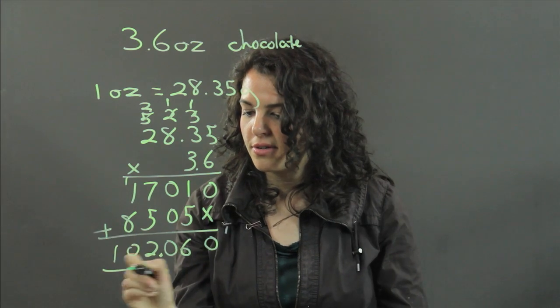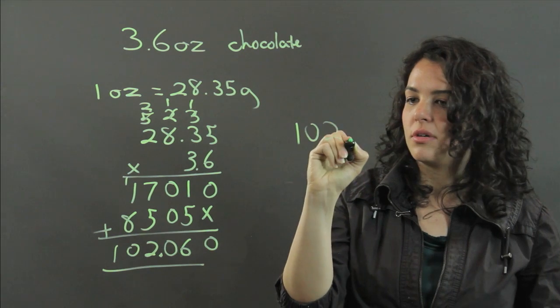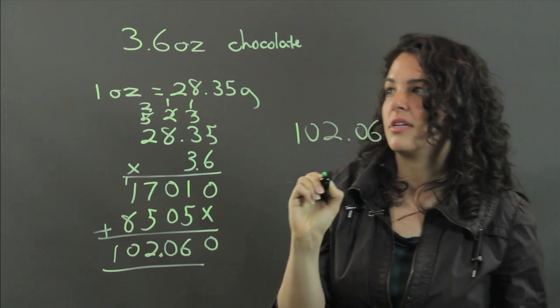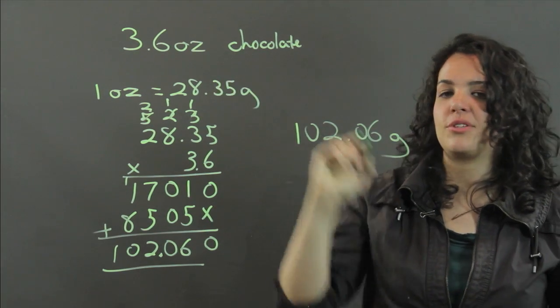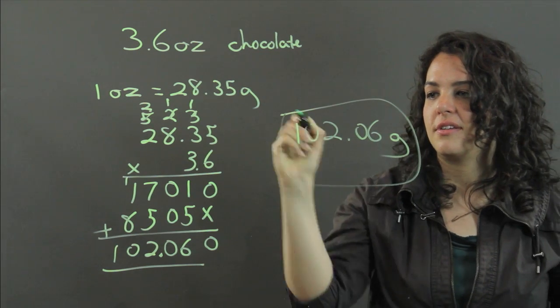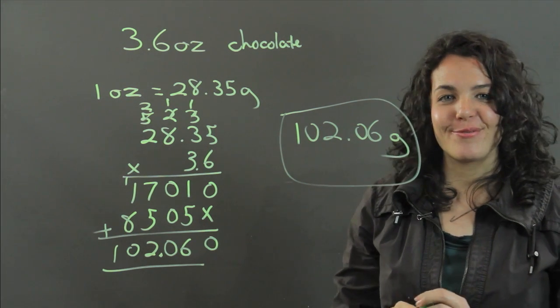So the answer is 102.06 grams in a 3.6 ounce bar of chocolate. That is how many grams of chocolate you're going to be eating. Thanks for watching.